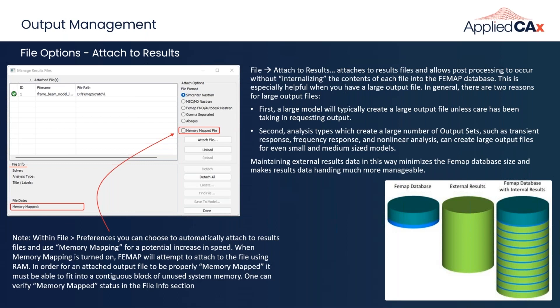Sharing models becomes impractical when you have large results sets internalized. The alternative is attaching the results files rather than automatically importing them. If you go this route, you'll have two files: your mod.fem file containing the model, and an associated op2 file containing the results. This keeps the mod.fem file small so it opens, saves, and shares quickly. The downside is you now have two files to manage, but let's take a look at this in the software.